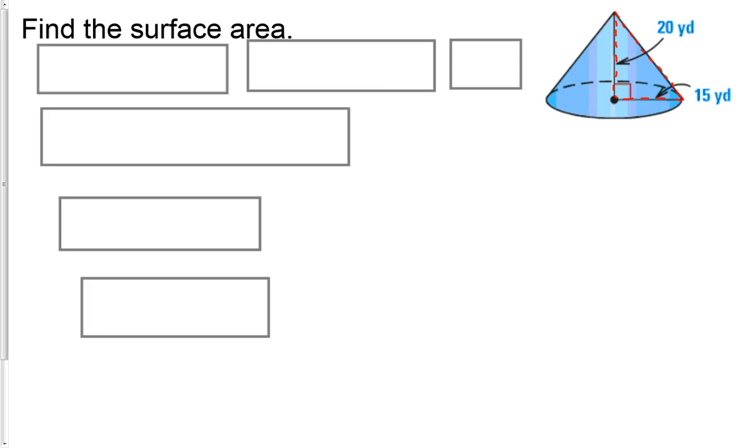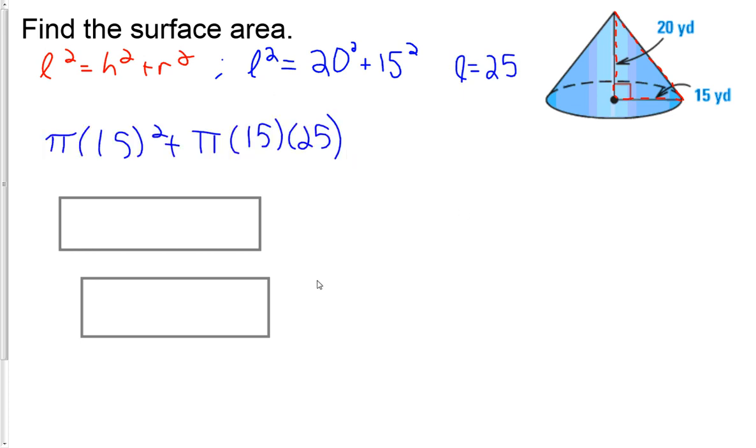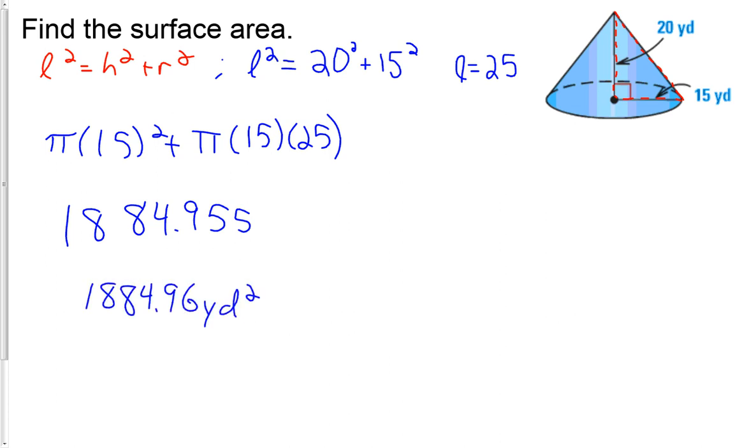So find the surface area. We've got height and we've got radius. We need slant height. A squared plus b squared equals c squared. Oh, this is 15, 20, 25. 3 times 5, 4 times 5, 5 times 5. It's a 3, 4, 5 right triangle. So technically, mathematically, you could do it this way and get L is 25. But you could also notice the 3, 4, 5. So pi r squared plus pi r L. Calculated 1884.955 rounds up to 1884.96 yards squared.